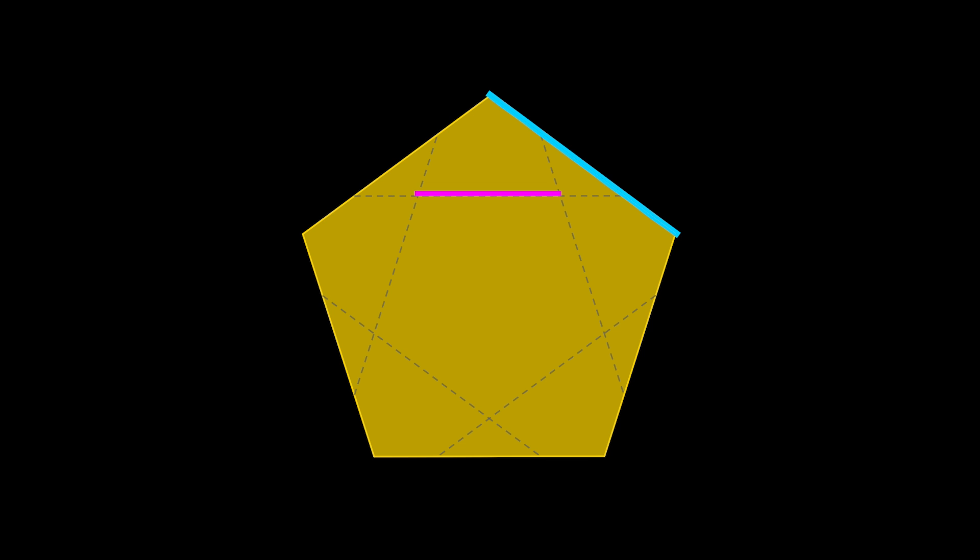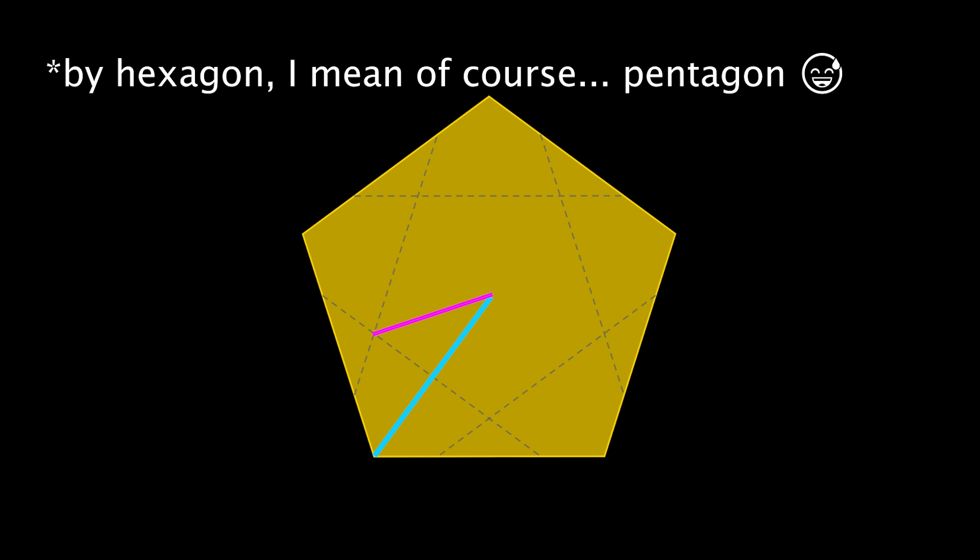And it's rather than looking at this side length and this side length is to look at the distance from the center to the vertex of the smaller hexagon and the larger hexagon and show that those are in the golden ratio.